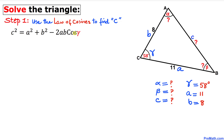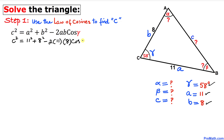Let's fill in the blanks. We don't know c, so we leave it. In our case, a = 11 and b = 8. Substituting those values: c² = 11² + 8² − 2 × 11 × 8 × cos(58°). Simplifying: c² = 121 + 64 − 176 × cos(58°).